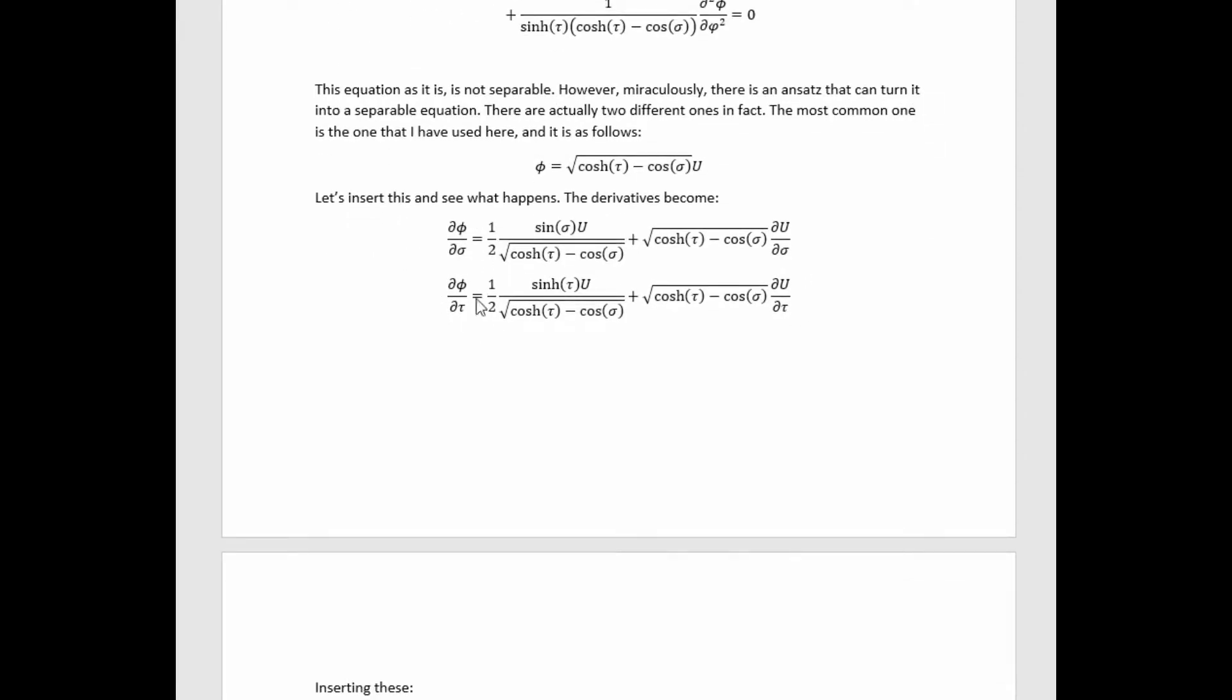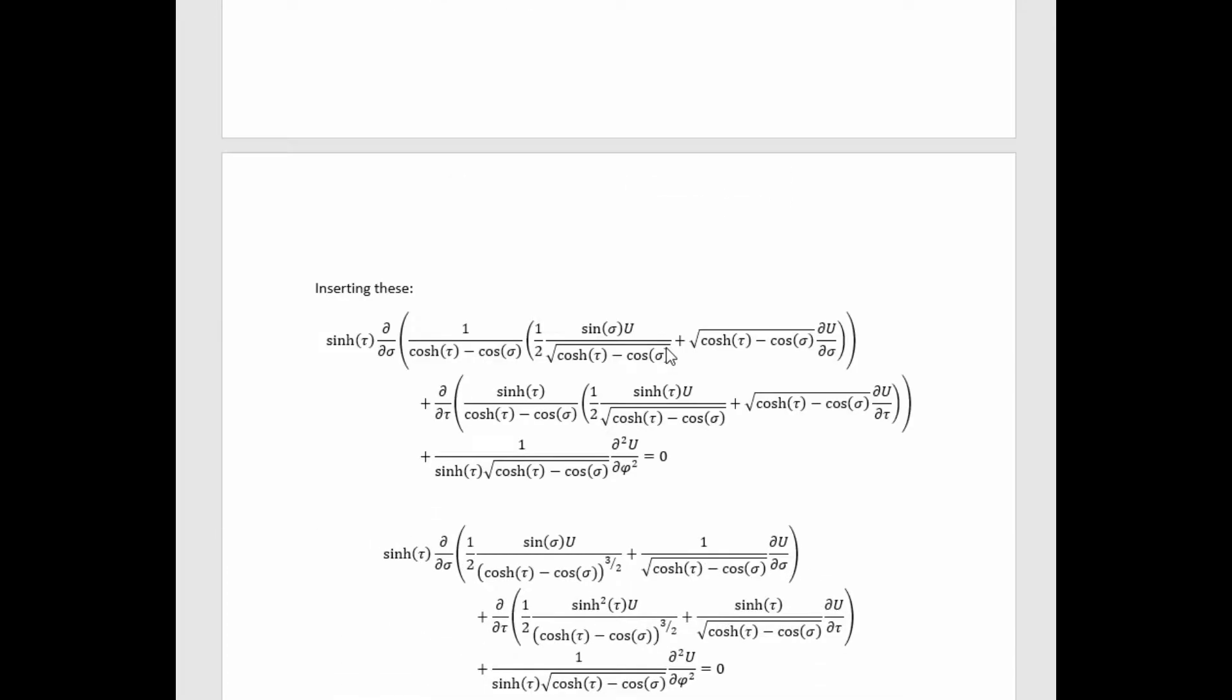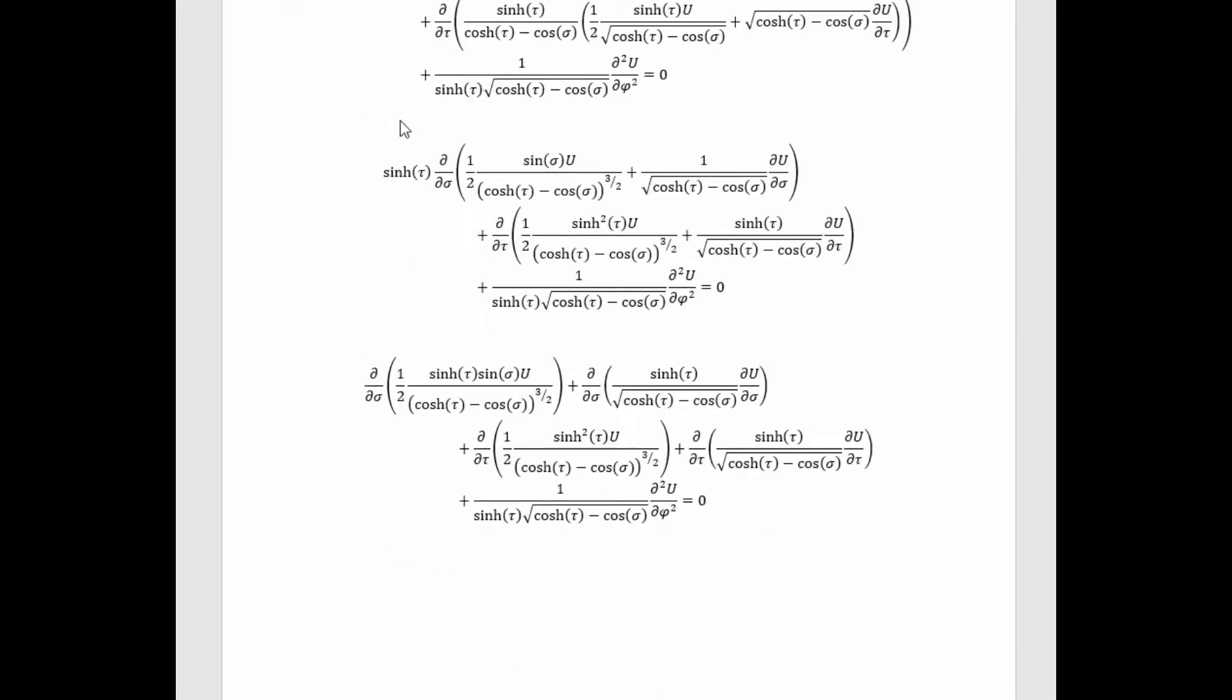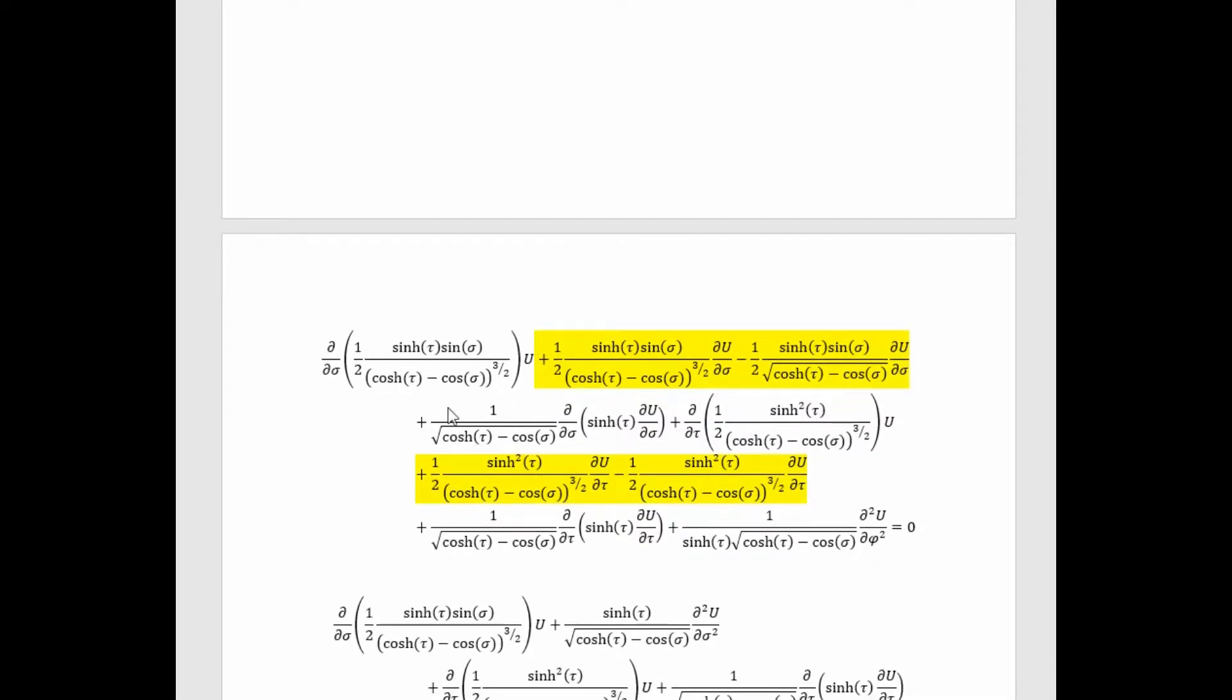First, the derivatives of the phi field become this. Inserting those gives us this. We can then multiply these factors through to get this mess. Then we can distribute the derivative through to get this. Then we can strategically use the product rule and rewrite the equation like this. I haven't fully taken advantage of the product rule to expand out the things these derivatives are applied to as much as I could. I've done it strategically, just so that we got these cancellations explicitly.